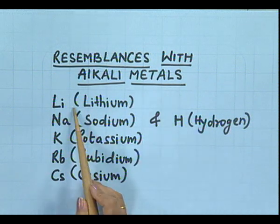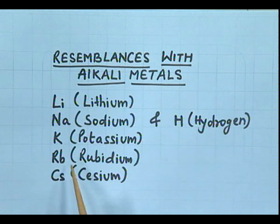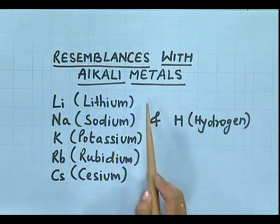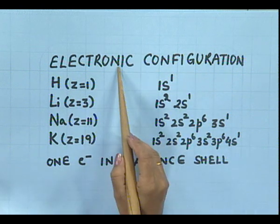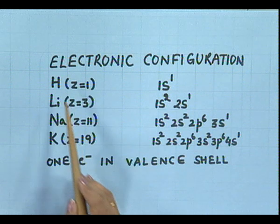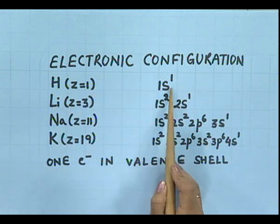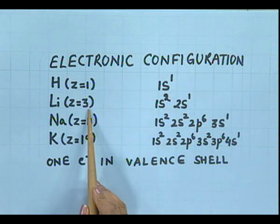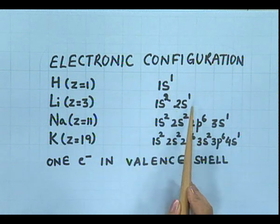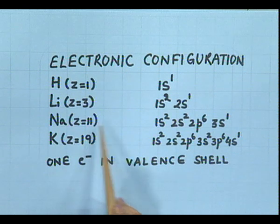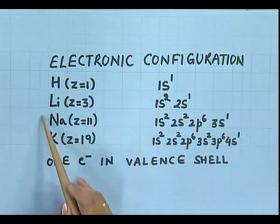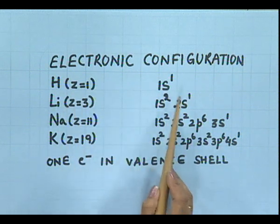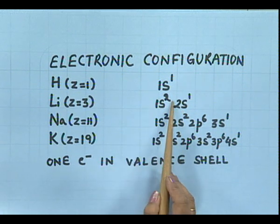Alkali metals are lithium, sodium, potassium, rubidium, caesium and francium. Francium is radioactive. We will discuss the resemblance of hydrogen with these first group elements. The first point of resemblance is their electronic configuration. Hydrogen, atomic number 1, has electronic configuration 1s1. Lithium, atomic number 3, has electronic configuration 1s2, 2s2, 2p6, 3s1. So we can see that just like alkali metals, hydrogen also has one electron in its outermost shell, and that is also in the s orbital.